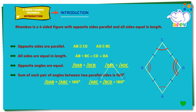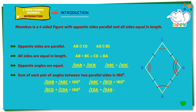Angle BCD plus angle CDA equals 180 degrees. Angle CDA plus angle DAB equals 180 degrees.